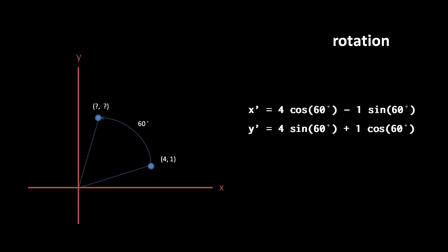Seeing this in action, say we have a point 4, 1, which we want to rotate 60 degrees around the origin. Plugging the values into our formula, the new x equals 4 cosine of 60 degrees minus 1 sine of 60 degrees, and the new y equals 4 sine 60 degrees plus 1 cosine of 60 degrees.